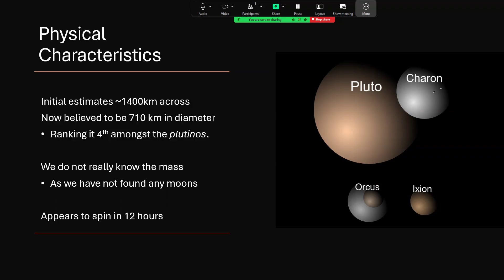What we can estimate from our studies is that it is quite big. Originally it was thought to be 1400 kilometers across, which would have made it a very large object, indeed one of the larger of the Kuiper Belt objects. Now we know it's 710 kilometers, so half that. And that puts it fourth in the group, the Plutinos, that orbit around in this same manner in this 3 to 2 lock with Neptune.